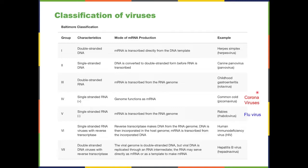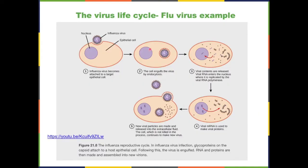The virus causing COVID-19 belongs to the coronavirus class and has a positive-strand RNA genome. The common cold virus is also a positive-strand RNA, while the flu virus is negative-strand. This is why we can't treat coronavirus with the same methods used for the flu — they are totally different viruses.